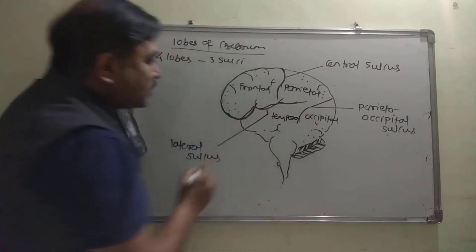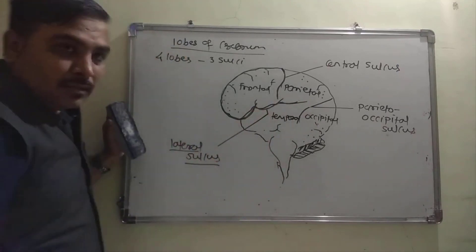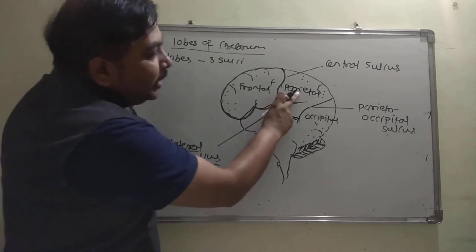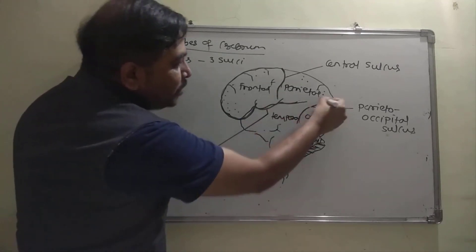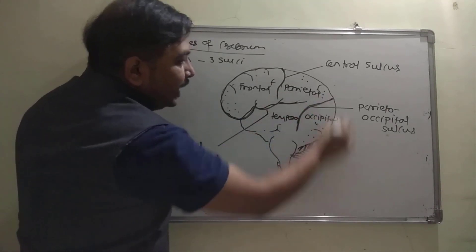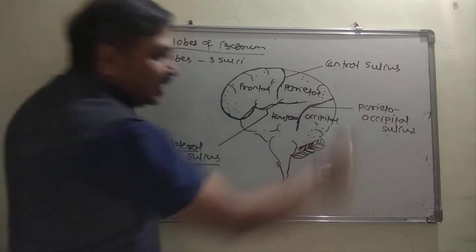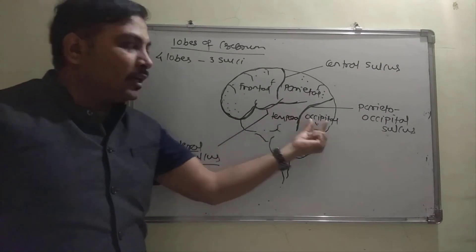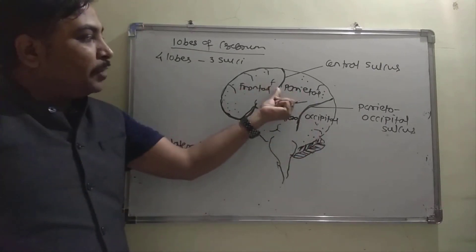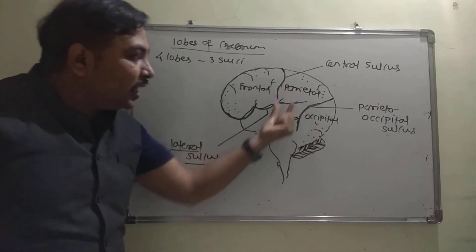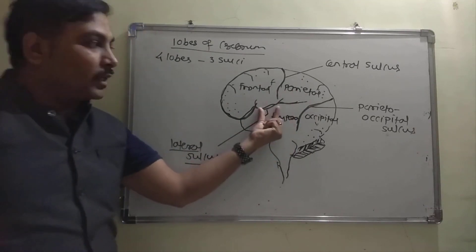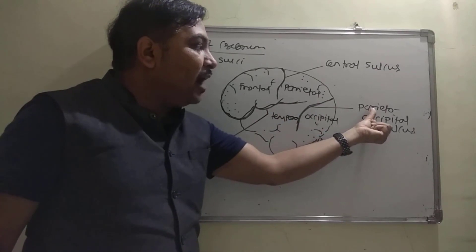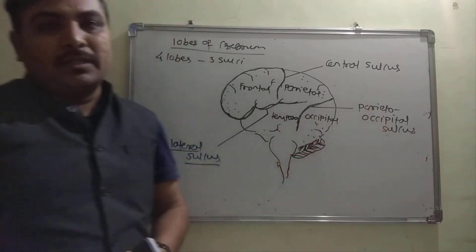The separation between parietal and temporal lobe is called the lateral sulcus. On the posterior side is the occipital lobe. The separation between parietal and occipital lobes is called the parieto-occipital sulcus. So in total: 4 lobes — frontal, parietal, temporal, occipital — separated by 3 sulci.